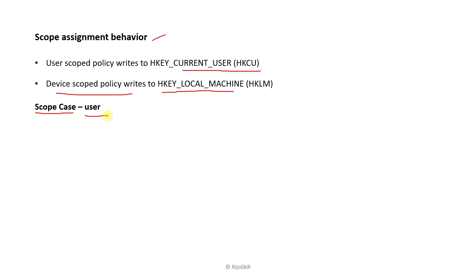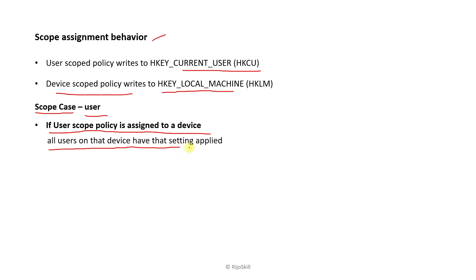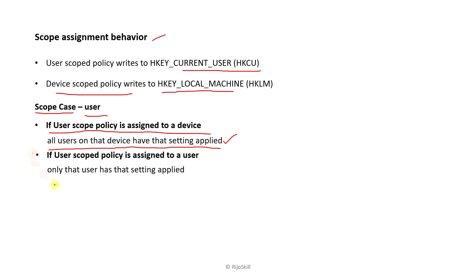Scope case one — user scope policy assigned to a device: if a user scope policy is applied to a device, all users on that device will have the setting applied, because whatever user uses that device will be affected. Scope case two — user scope policy assigned to a user: only that particular user will have the setting applied.